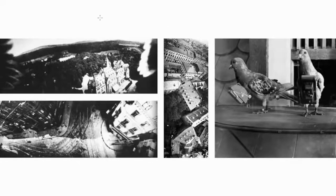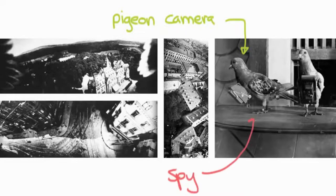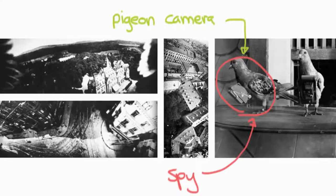This is called a pigeon camera — I didn't even know these things existed. A pigeon camera is basically made for spies. This little guy here is totally a spy, working for either the Germans or the Brits. They would basically strap these cameras onto these poor little pigeons and send them out across enemy territory.